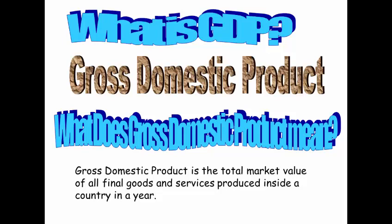Let's look at the important words in this definition. Notice how it says total market value, so there's got to be some sort of dollar amount or market value to the Gross Domestic Product. Of all final goods and services — so we're not talking about intermediate types of goods and services. Produced — not sold — but when was it produced, inside a country, so it's where it's produced in which country, and then the last is in a year. So those are important words in Gross Domestic Product.